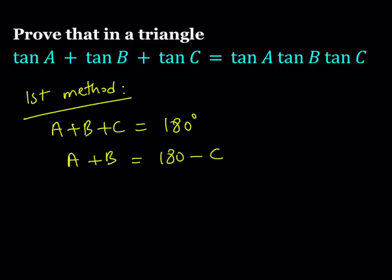At this point, we've done a problem like this before, where we had X plus Y plus Z equals X times Y times Z. If you remember, we were looking for integer solutions, and we got the solution 1, 2, and 3 — and of course the permutations of that as well. This is kind of similar to that one, but this is just for a triangle.